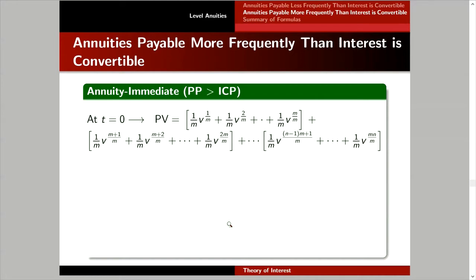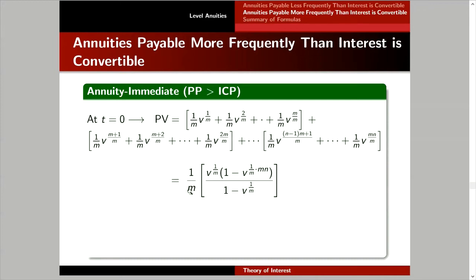Notice that 1 over m is a common factor that can be factored out. After factoring, you form a geometric series. The first term is v raised to 1 over m, the common ratio is also v raised to 1 over m, and the total number of terms is m times n — the total number of payments. Applying the geometric series formula gives a simplified expression.